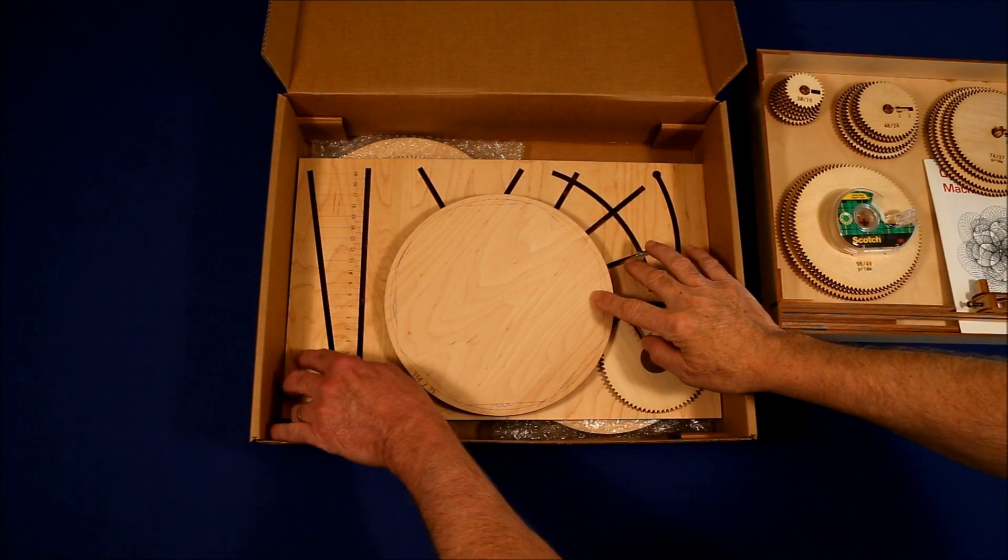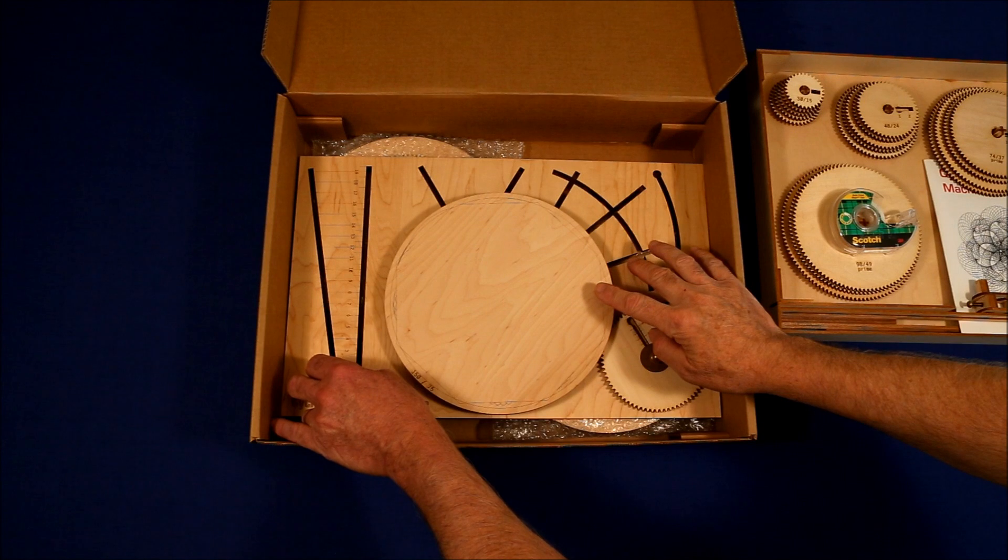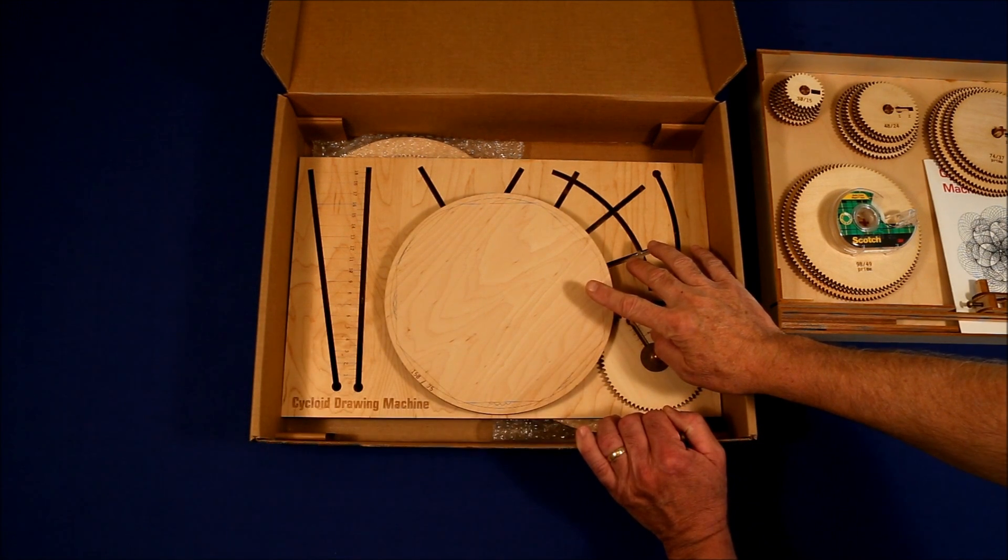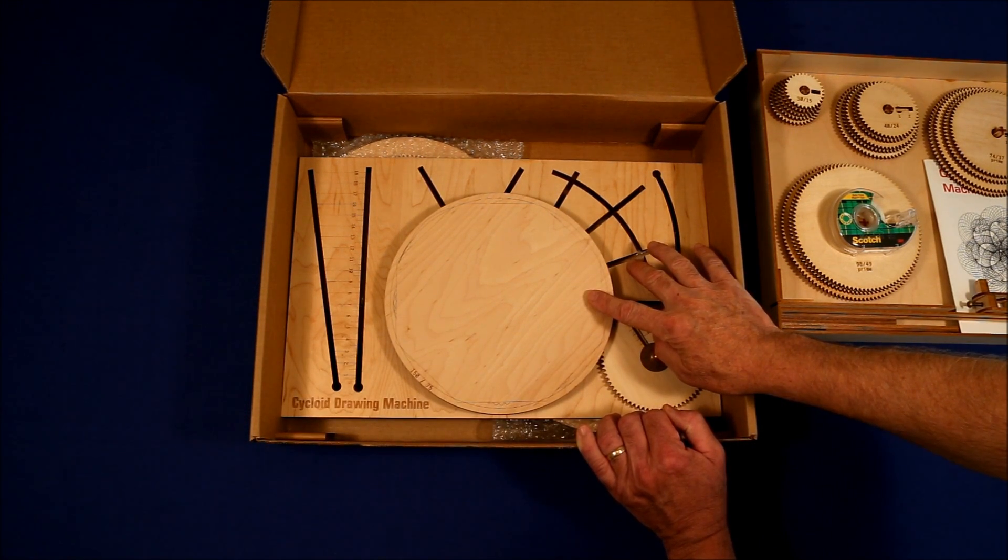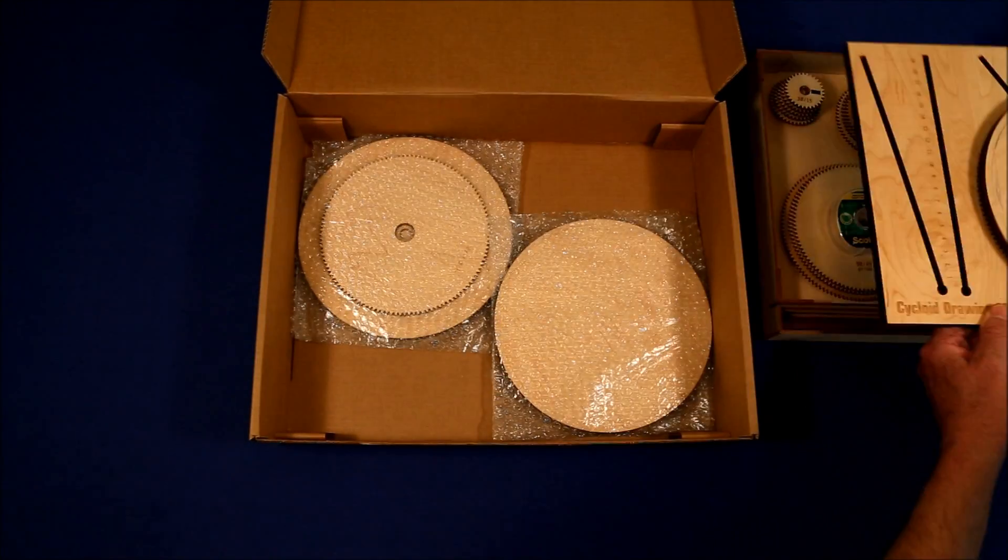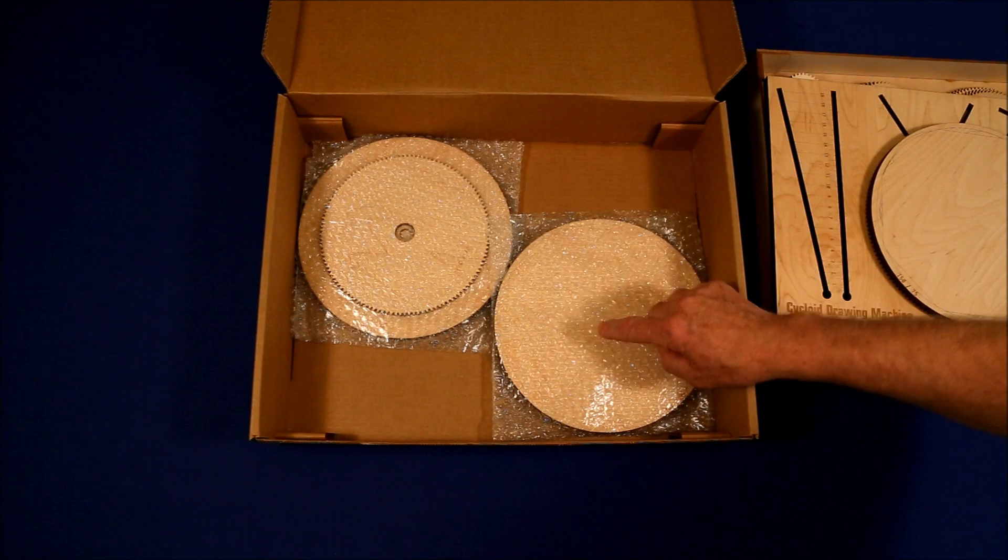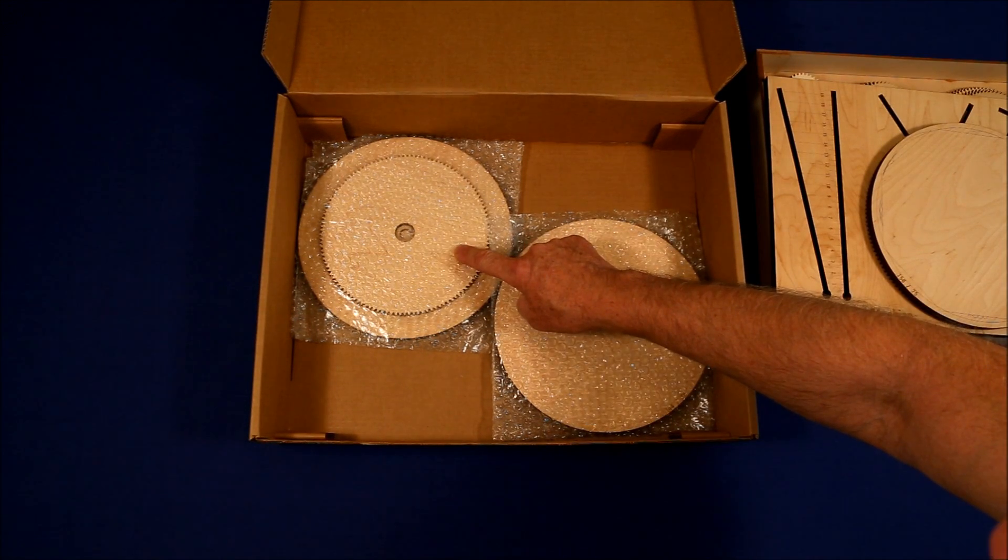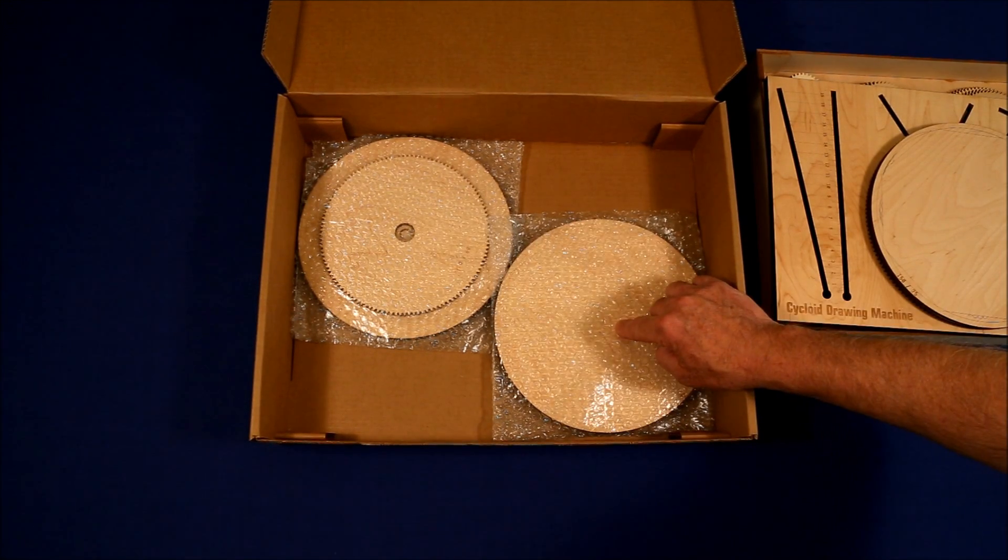The machine comes with three main turntables. A 150 tooth table is on the machine initially and underneath it there is a 120 tooth wheel and a 144 tooth wheel.